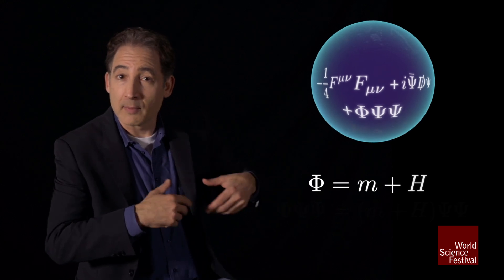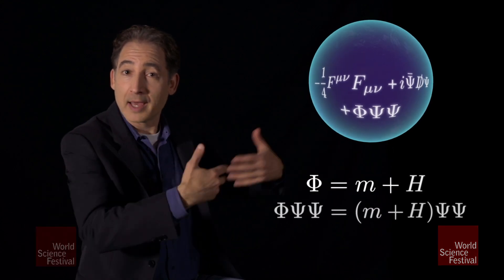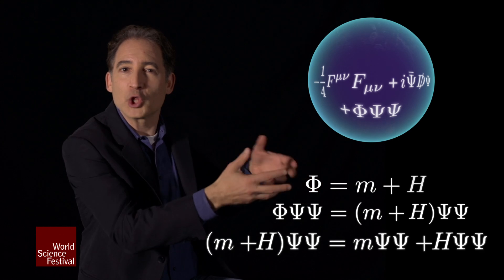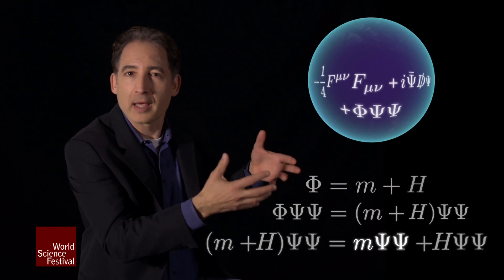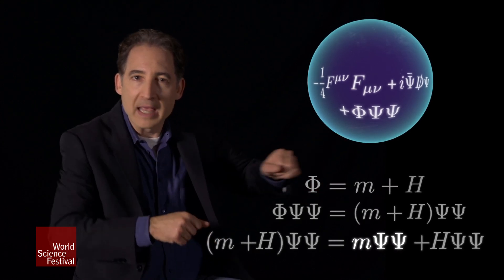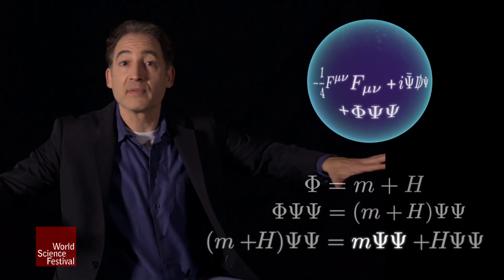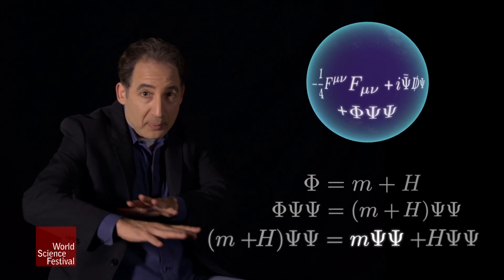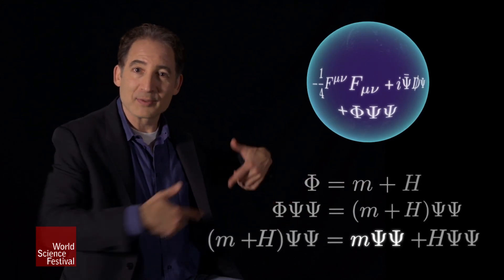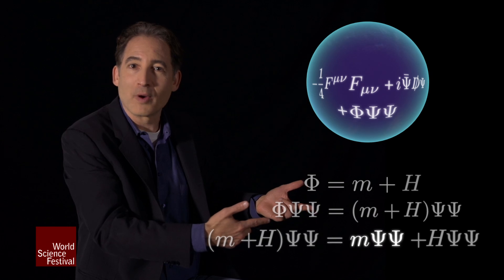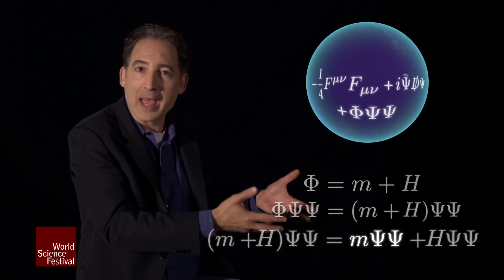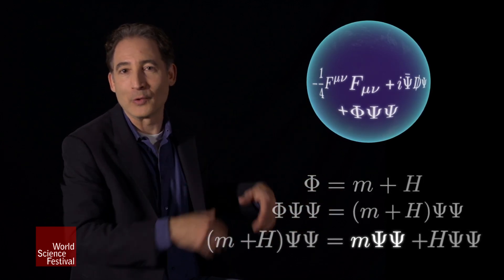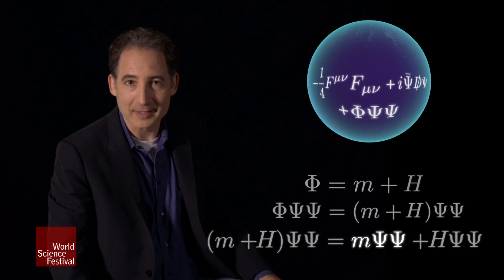where M is just a number, then when you multiply that through, look what happens. The M multiplies the psi-bar and the psi — it looks like a mass term. And that M is the constant value of the field that's permeating space. So that permeating field, in this mathematical guise, gives rise to the mass of particles. That's how the mathematical form of this idea works.